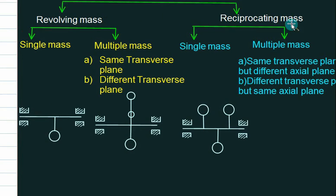Similar to this, reciprocating masses will also be classified into single mass and multiple mass. So reciprocating system will be something like this: we have a piston, we have a cylinder, we have a crank and connecting rod. So if this piston will reciprocate, this piston will reciprocate.